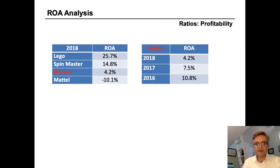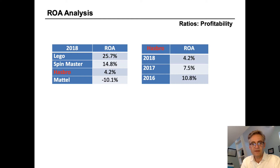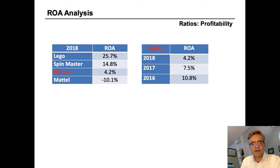On the chart on the left-hand side, you can see the return on assets for other toy companies. The industry ranges from a negative 10% for Mattel to a positive 25% for Lego. We can see that Hasbro is in the low end of the industry range.